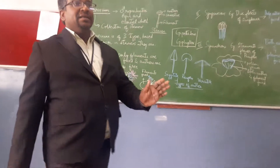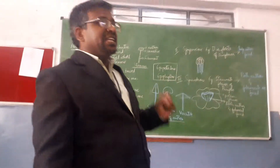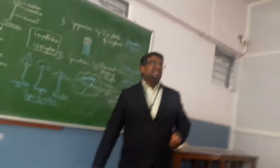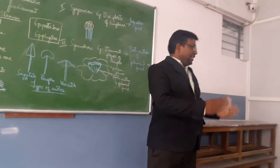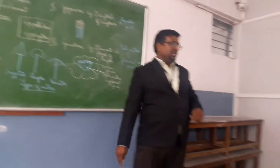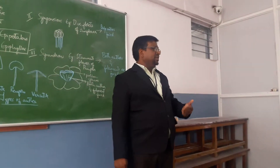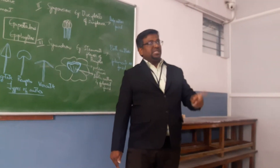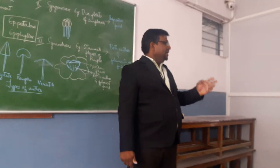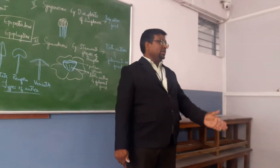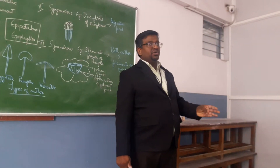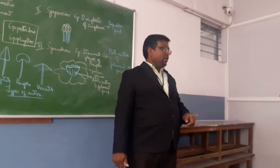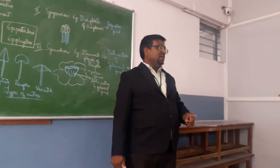The essential organs of a flower are directly involved in sexual reproduction. Flowers are modified and dedicated for the purpose of sexual reproduction. Androecium and gynoecium are the essential organs of the flower, while calyx and corolla are the non-essential organs. Androecium is the male reproductive organ of the flower.